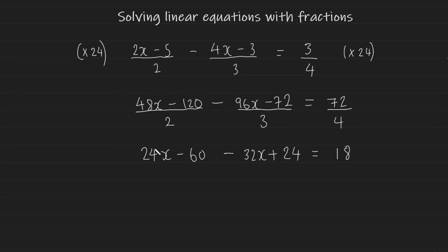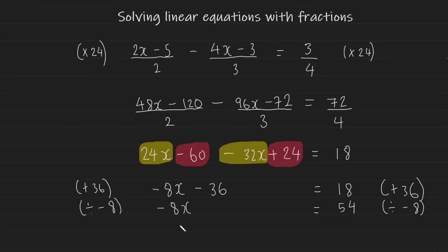And now this is equal to 72 over 4, which is 18. Simplifying the left-hand side, let's collect like terms. 24x minus 32x. This gives us negative 8x. And collecting the numbers now, minus 60 plus 24 will give us negative 36. And on the right-hand side, we have 18 still. So now this just becomes a two-step equation. We add 36 to both sides, which leaves us with minus 8x equals 54. And now we divide both sides by negative 8, which gives us x is equal to 54 divided by negative 8.